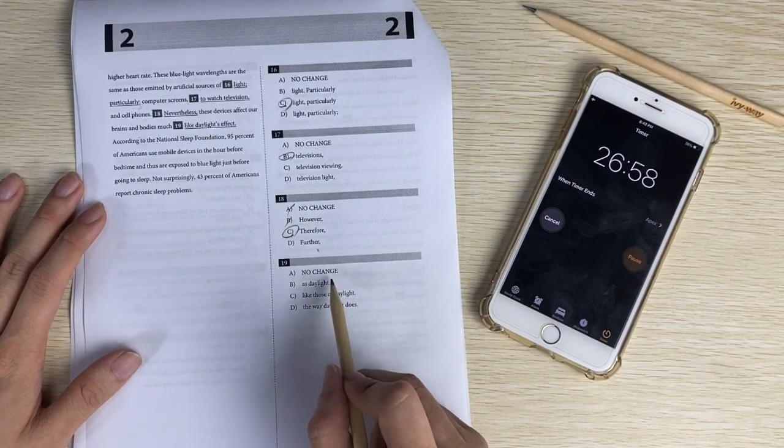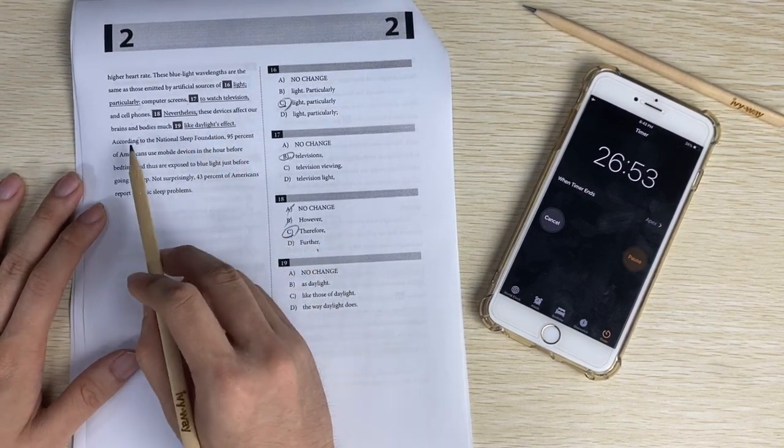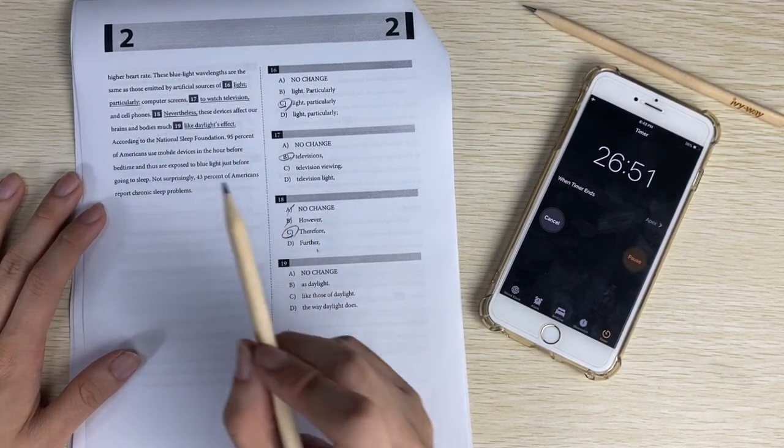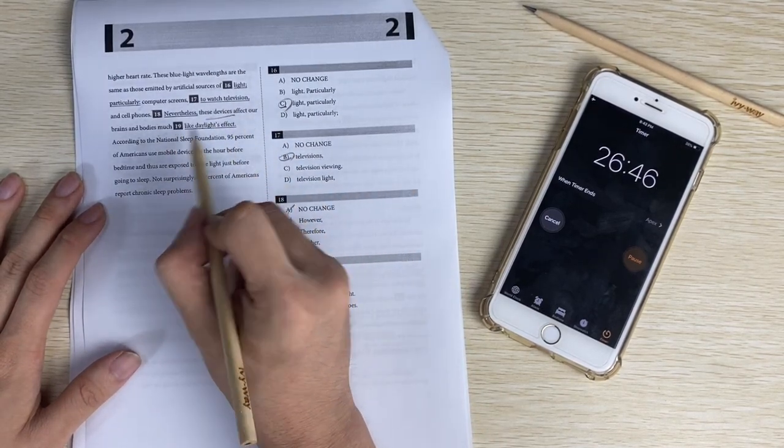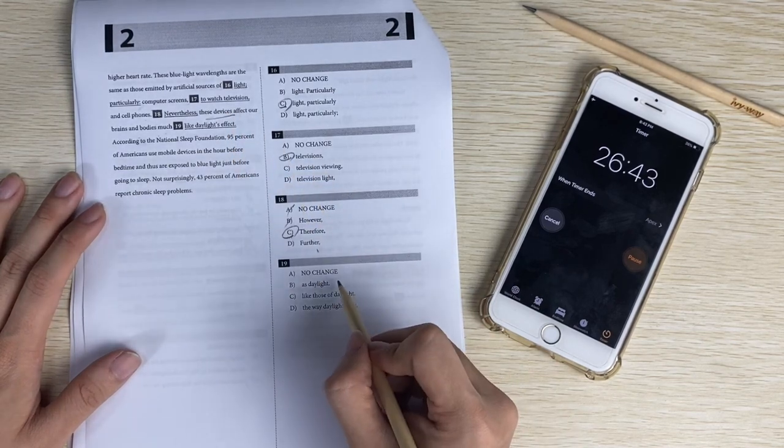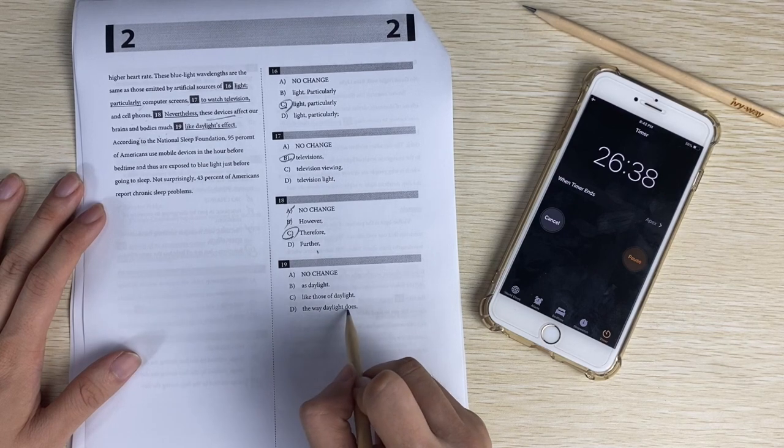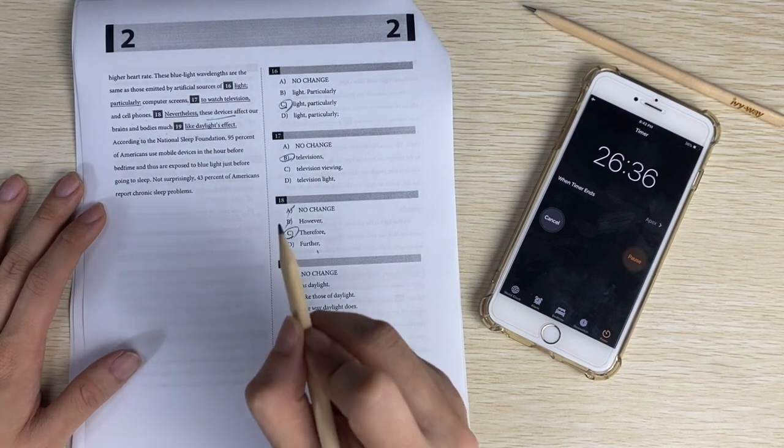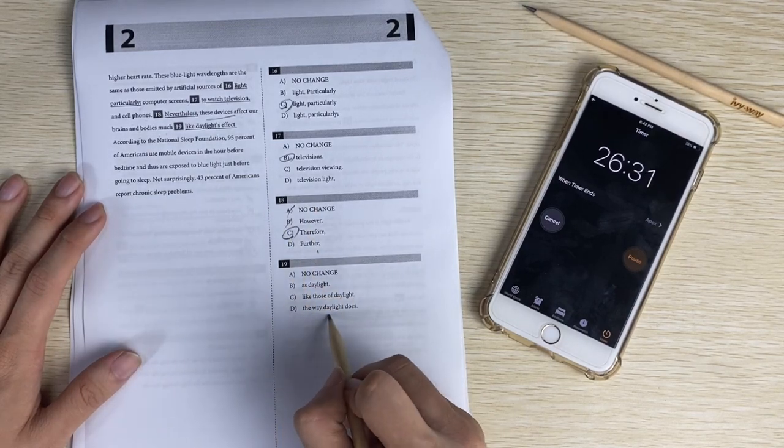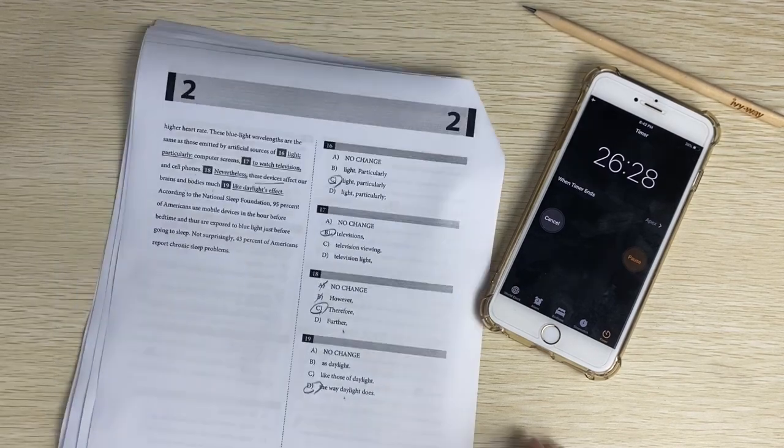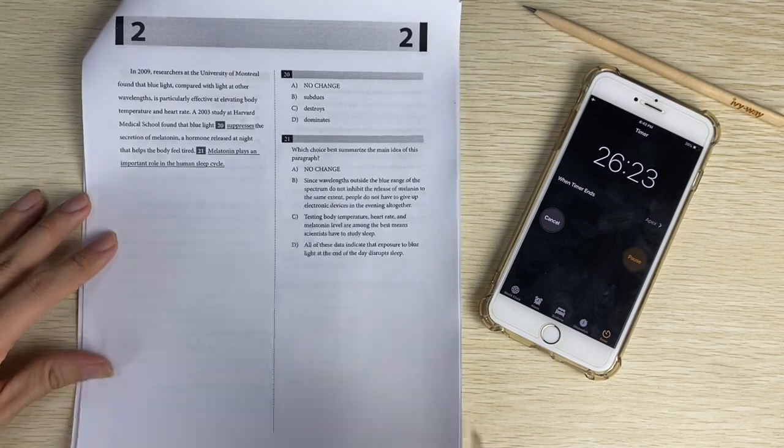Number nineteen, daylight. So maybe comparison, parallelism. So should be these devices much they affect much like something about devices. Those of daylight, the way the daylight does - comparing the devices affect our brains like the way the daylight does, of course. How are you at a time? Okay, within nine minutes. That's fine.